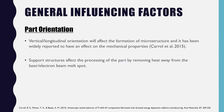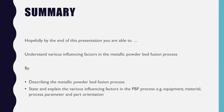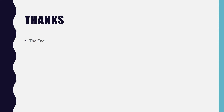Those are the general influencing factors. To summarize, by the end of this presentation you should be able to describe the metallic powder bed fusion process, and state and explain the various influencing factors — equipment, material, process parameters, and part orientation. Thank you for listening, and thanks to all the references for the valuable data, images, and information.